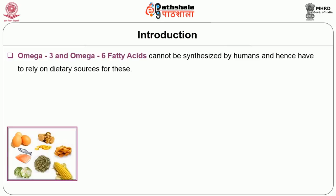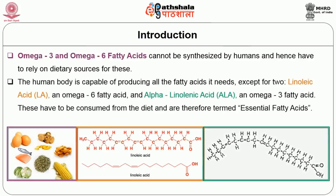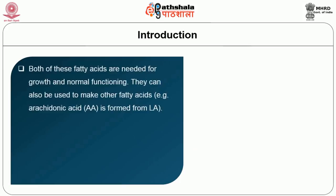Omega 3 and omega 6 fatty acids cannot be synthesized by humans and hence we have to rely on dietary sources. The human body is capable of producing all the fatty acids it needs except for two: linoleic acid, an omega 6 fatty acid, and alpha-linolenic acid, which is an omega 3 fatty acid. These have to be consumed from the diet and are hence termed essential fatty acids. Both are needed for growth and normal functioning, and they can also be used to make other fatty acids — for example, arachidonic acid is formed from linoleic acid.